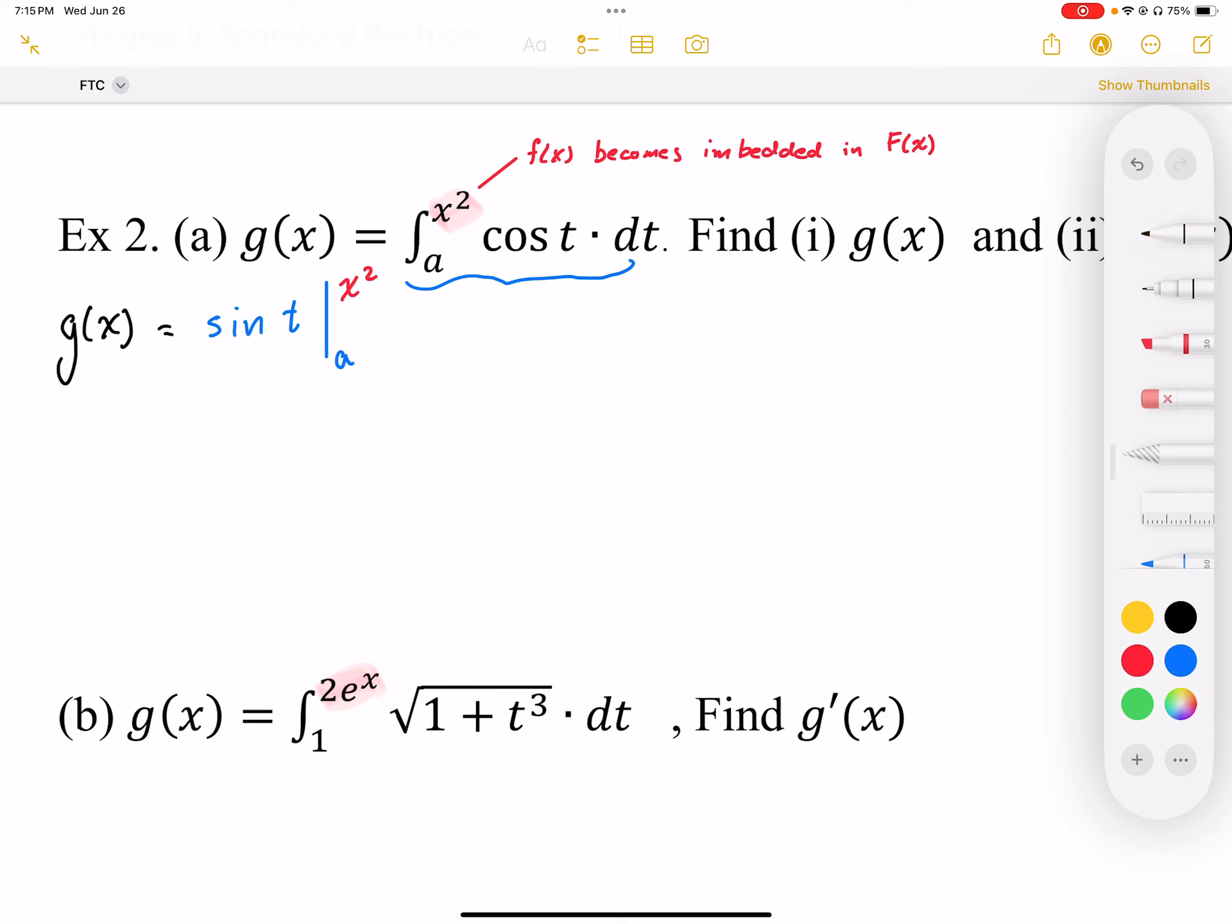So evaluating this, we're going to end up with sine of x squared. Notice that the x squared is now embedded inside the antiderivative function minus sine a.